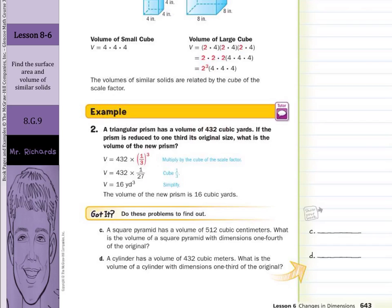And if we take a look at C, a square pyramid has a volume of 512 cubic centimeters. What is the volume of a square pyramid with dimensions one-fourth the size of the original? Well, volume is going to equal the original 512 multiplied by the scale factor, in this case one-fourth, and that's going to be cubed. So volume is going to equal 512 times, and to cube this, 1 cubed is 1, and 4 cubed is 64, so 1/64th. And when we multiply that by 512, our result is 8, so 8 centimeters cubed.